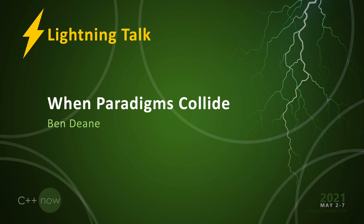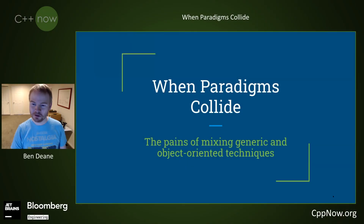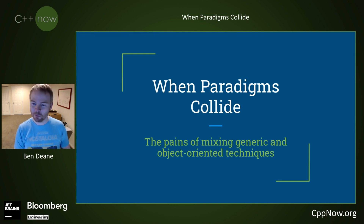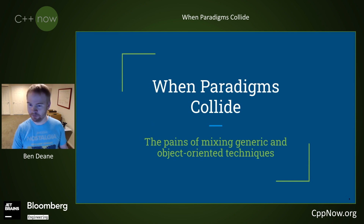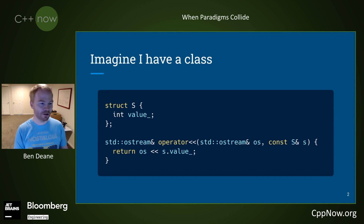So, when paradigms collide. Most of us are used to writing in object-oriented style, and many of us are also becoming more used to writing in generic style. Sometimes these paradigms collide. Let's say that you have a class and you write a perfectly conventional output stream operator for this class.